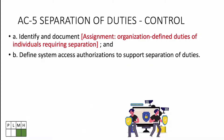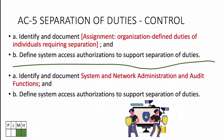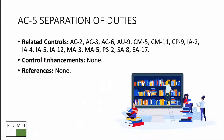Here's how the control looks: first, identify and document — that's an organizationally defined variable — the duties of individuals requiring separation. Then define system access authorizations to support separation of duties. In a fake system example, we identify and document system, network, and audit functions, then define access authorizations to support that separation.